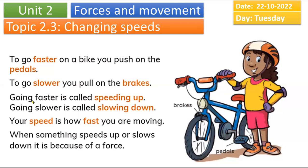If you want to go faster, it is called speeding up. If you want to go slower, it is called slowing down. Your speed is how fast you are moving. When something speeds up or slows down, it is because of a force. When you push and pull this bike you can change the speed — fast and slow.